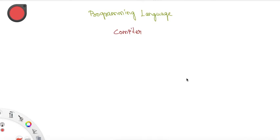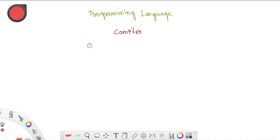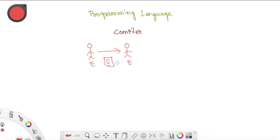The topic is Compiler in Programming Language. If we want to communicate naturally, we use language. In this language, we use language for communication. We will use the English language for a task. This is the first scenario.